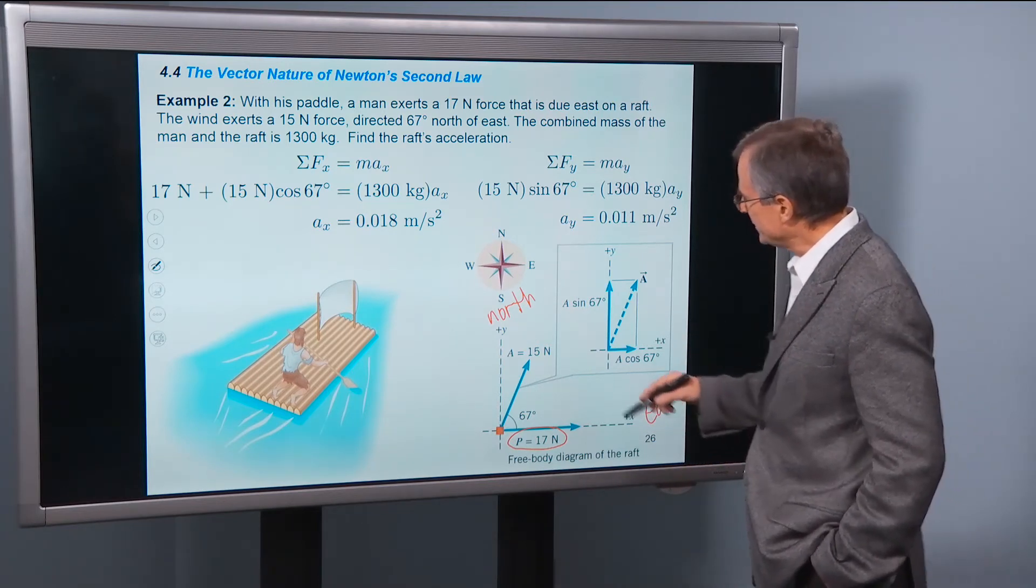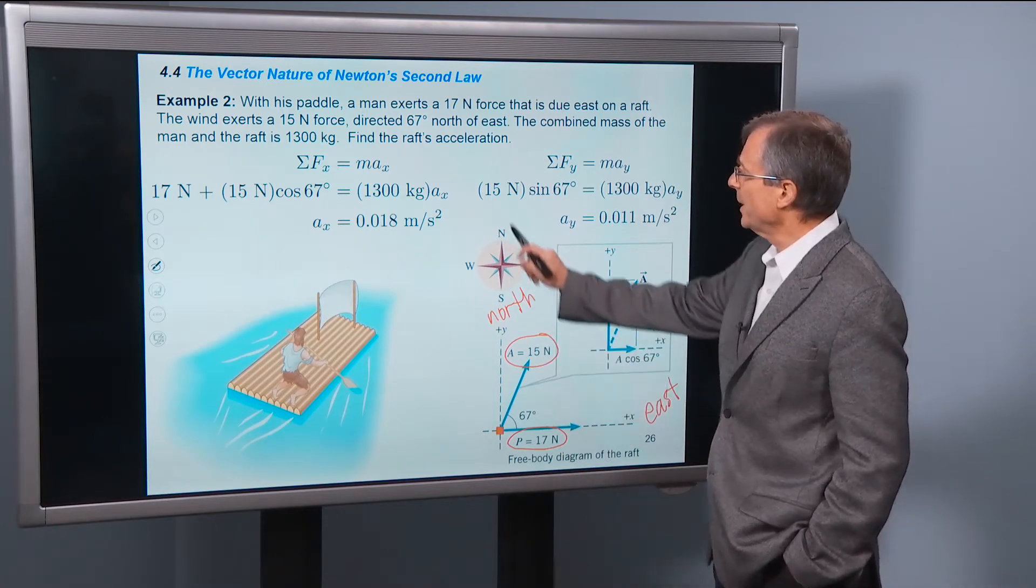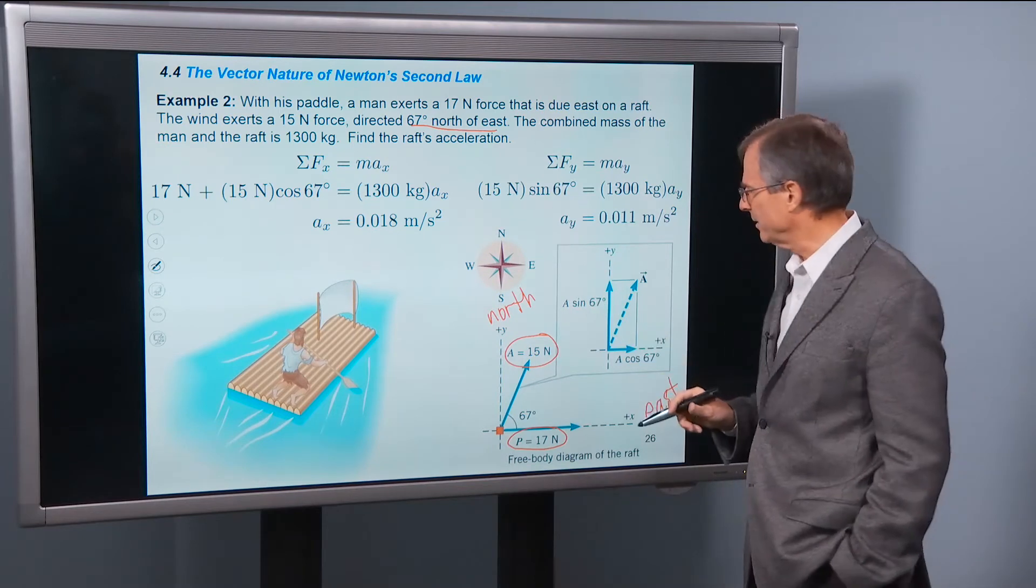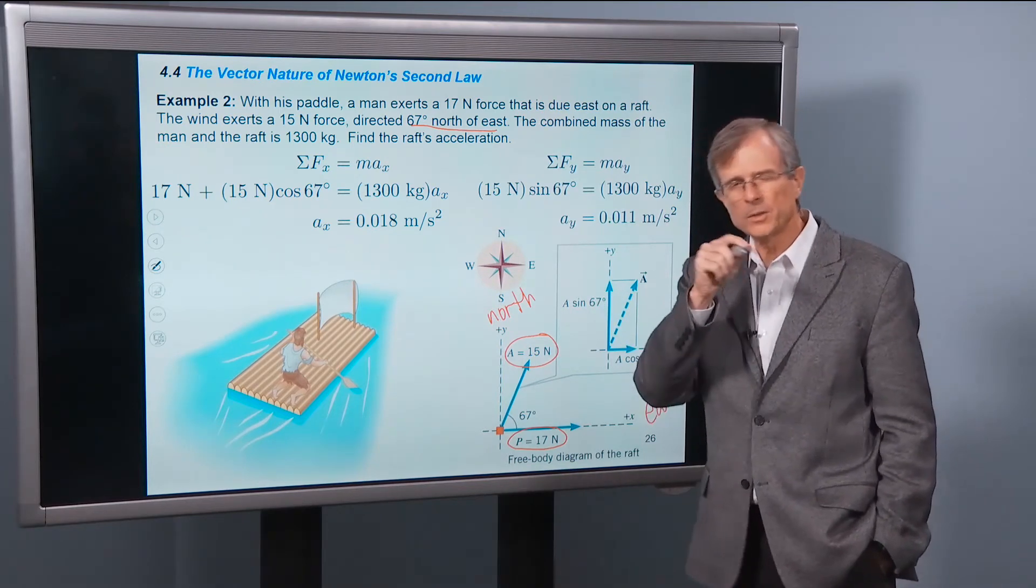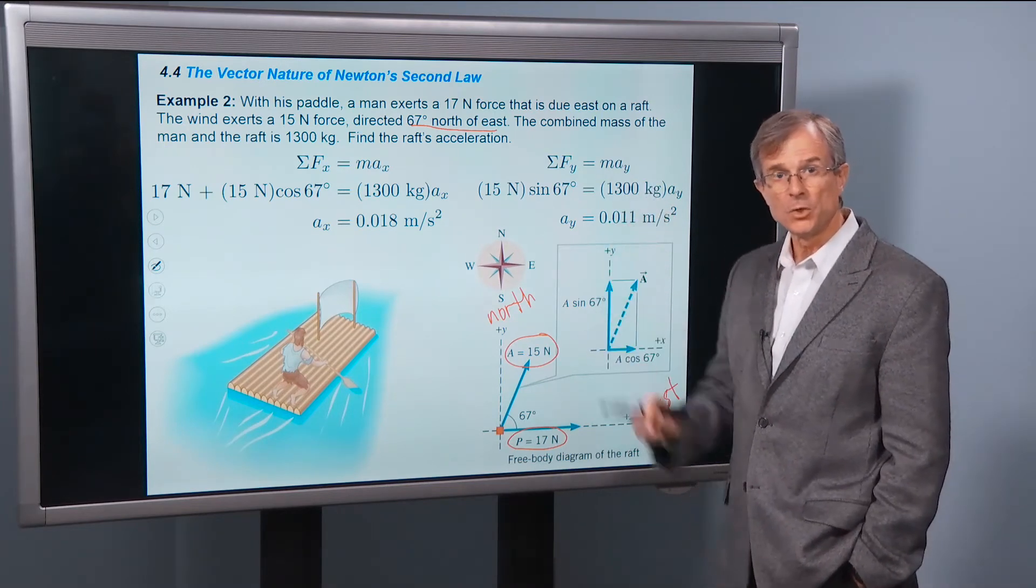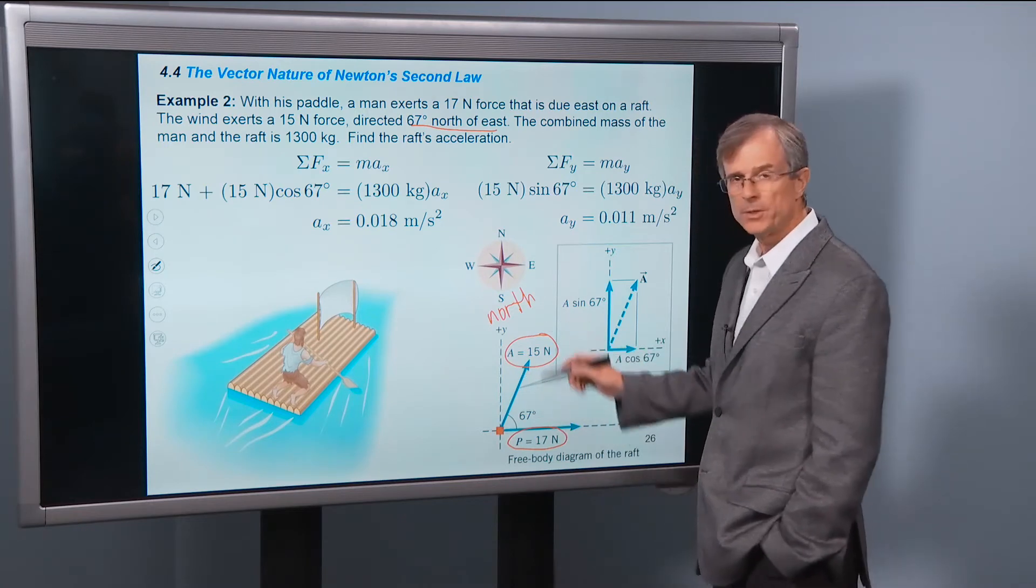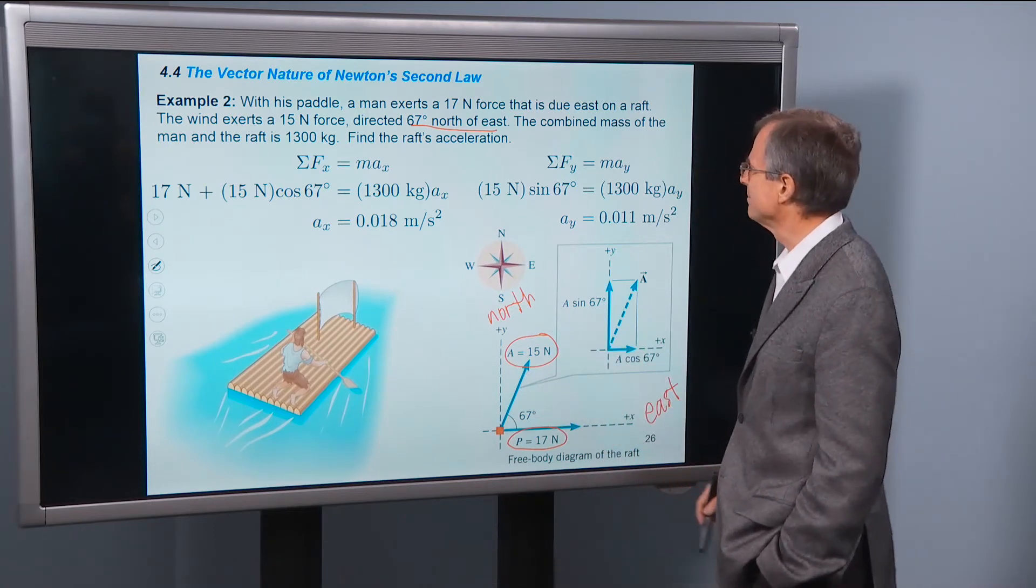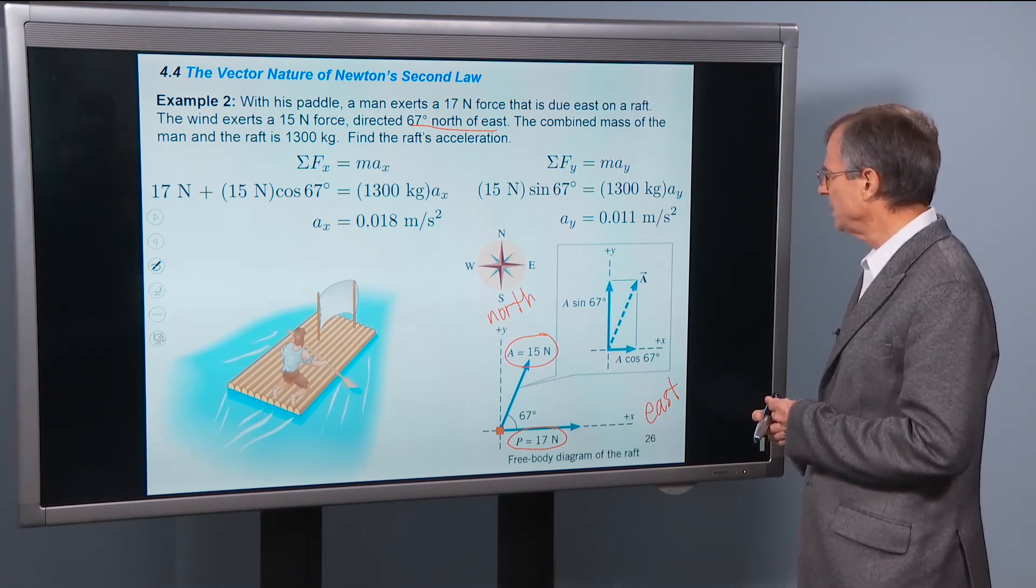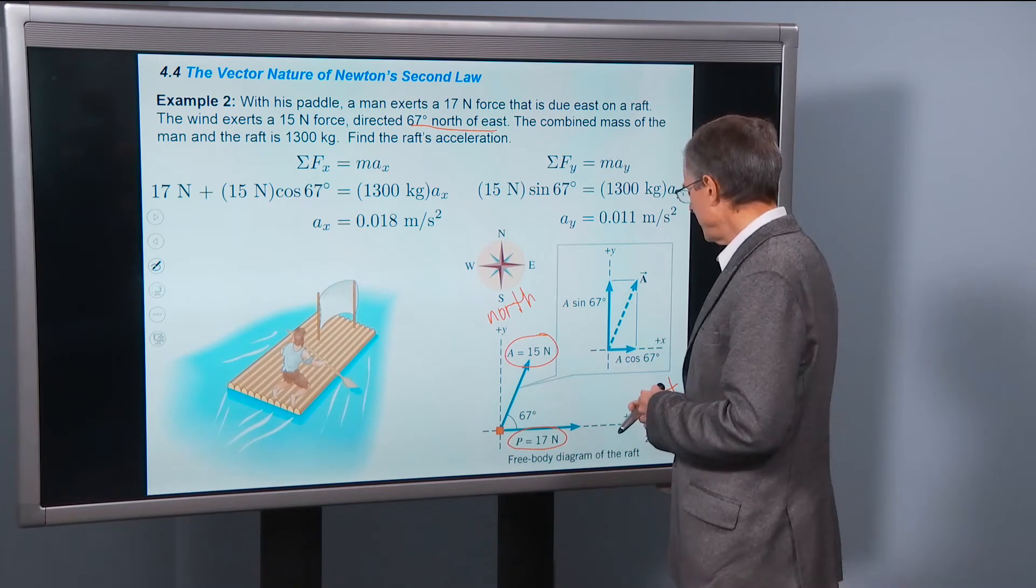The wind is exerting a 15 newton force that's directed 67 degrees north of east. So how do you figure that out? At an angle that's north of east, you start with east. And then you go 67 degrees north of east. Well, here's east, here's 67 degrees north of east. The combined mass of the man and the raft is 1300 kilograms. Find the raft's acceleration. Well, can we do that? We sure can.